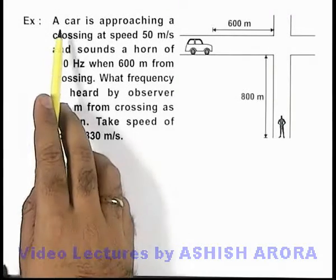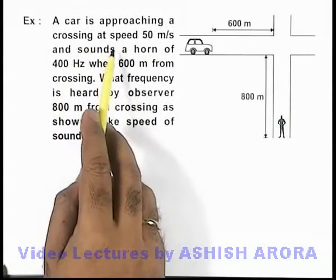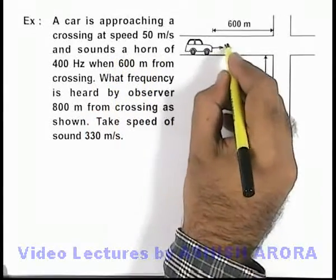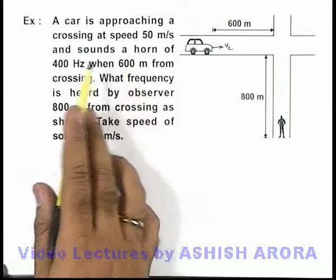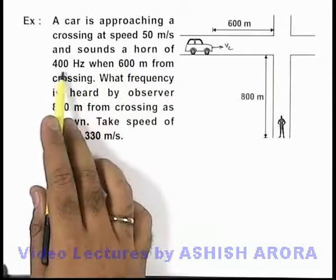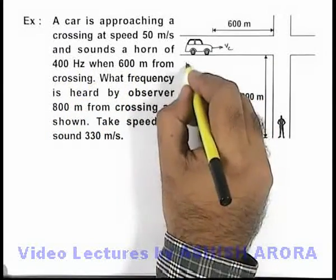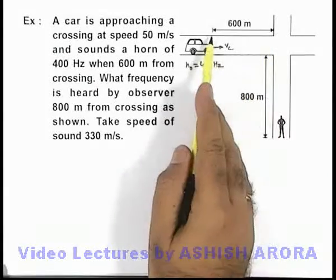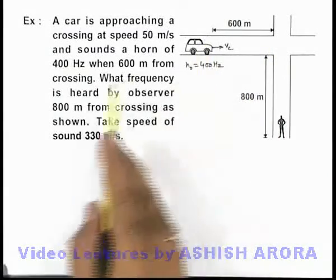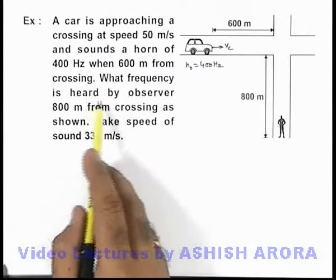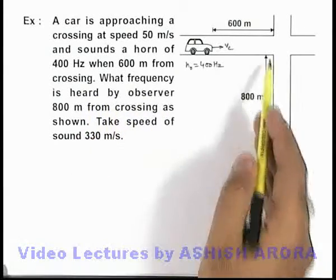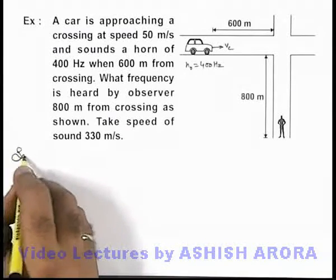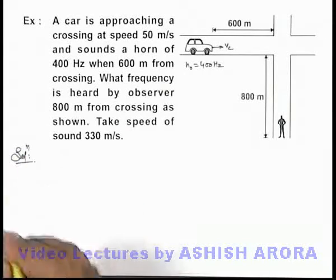In this example, a car is approaching a crossing at a speed of 50 meters per second. This car is travelling at speed v_c which is 50 meters per second, and sounds a horn of frequency 400 hertz. It is 600 meters from the crossing. We are required to find what frequency is heard by an observer 800 meters from the crossing as shown. The speed of sound is taken to be 330 meters per second.